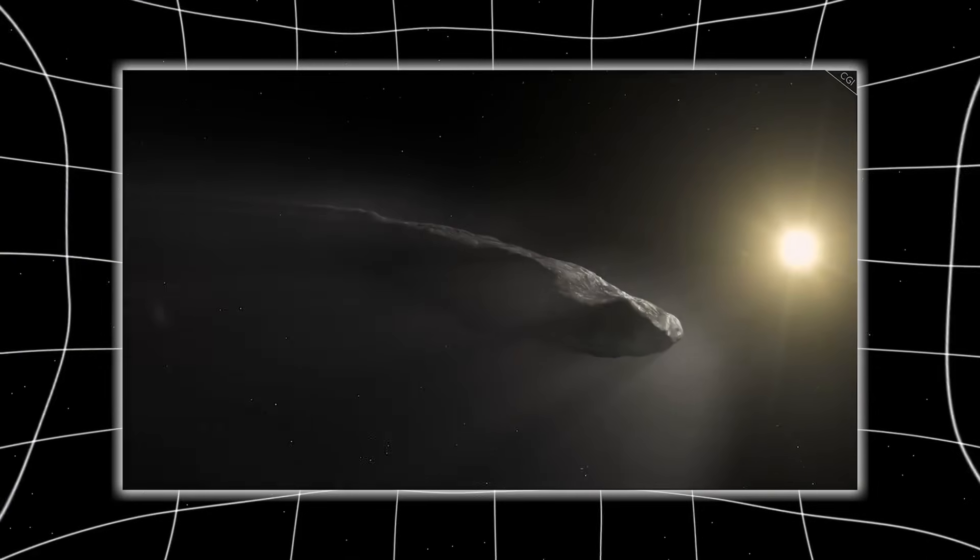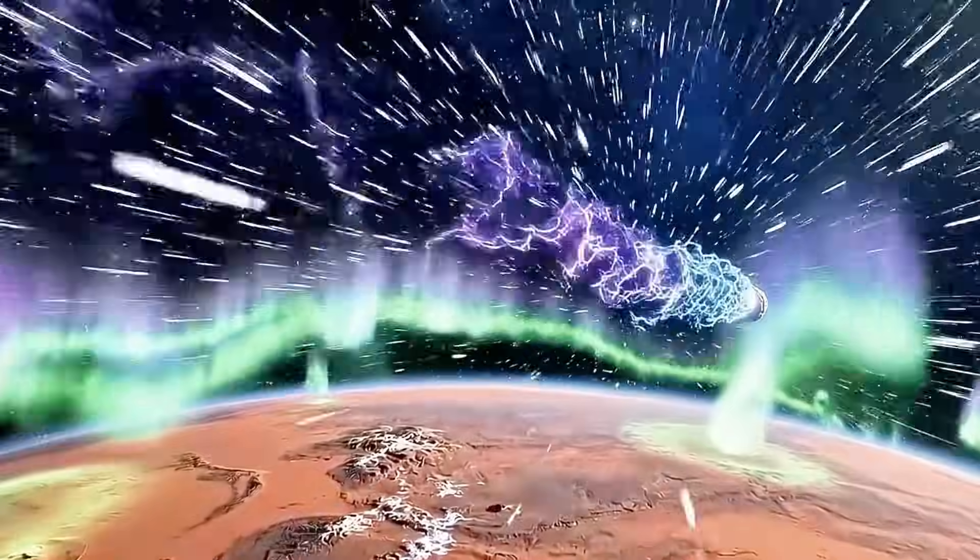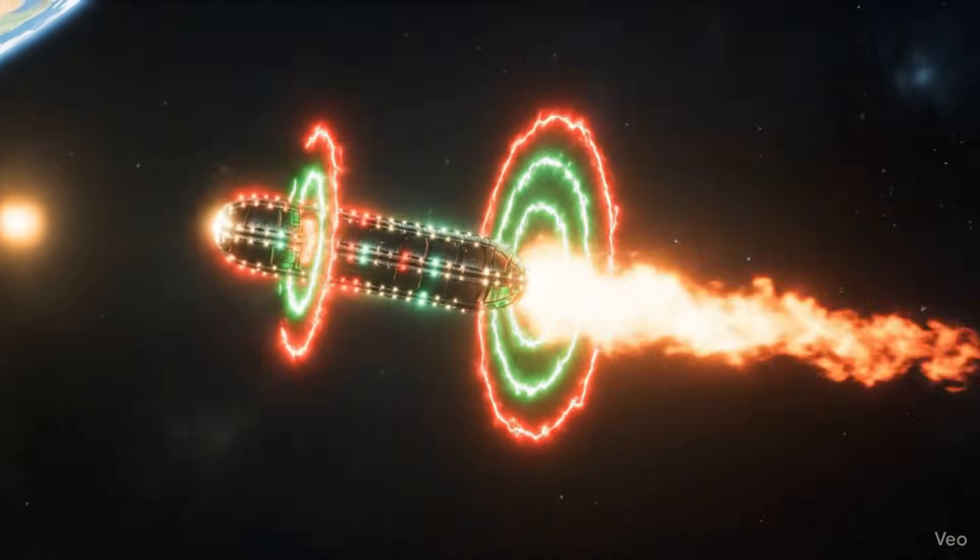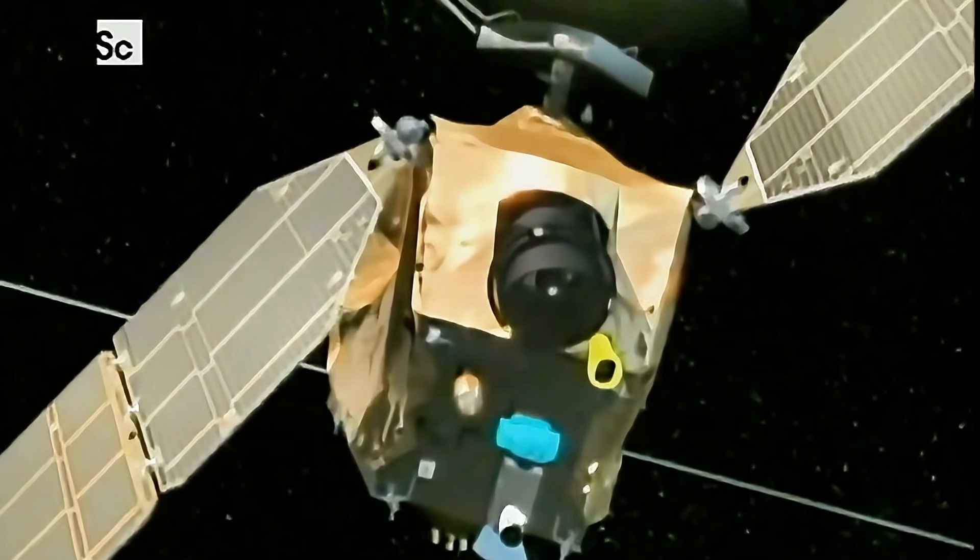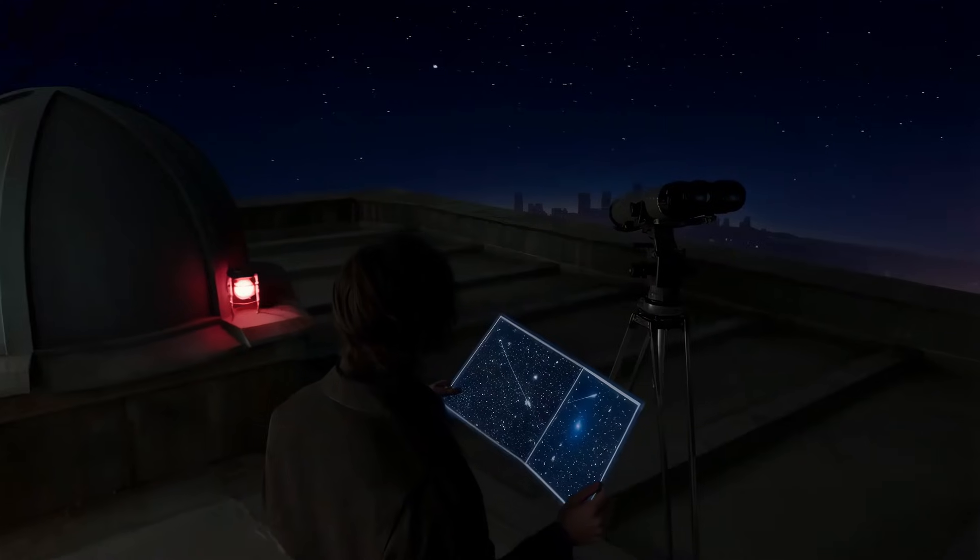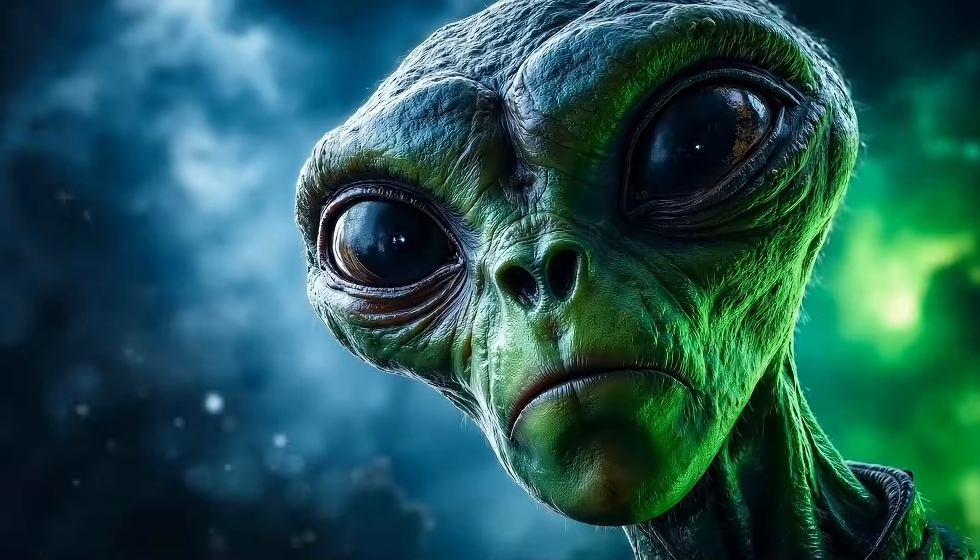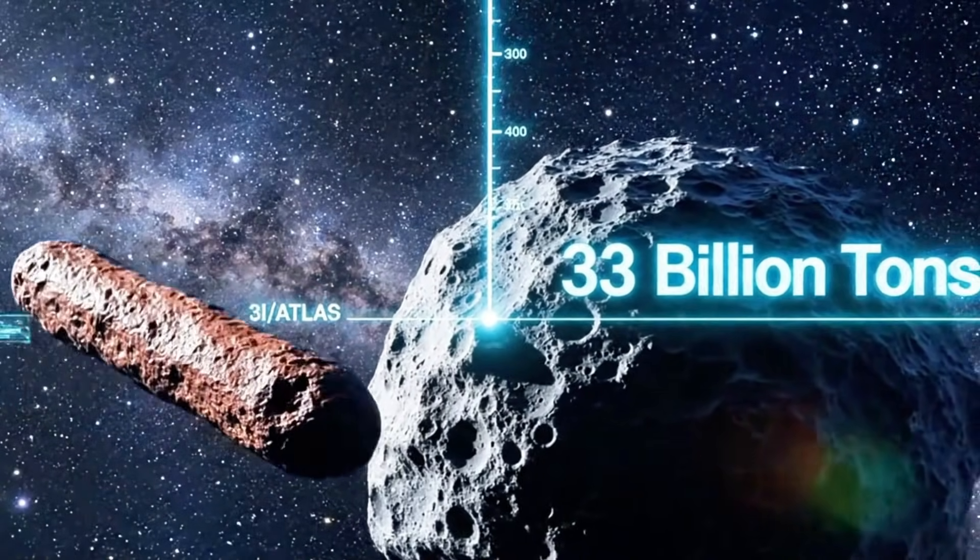Tonight's observation window critical for multiple reasons. First, maximum resolution. Closest approach means smallest angular separation, means largest apparent size, means finest details visible. Surface features, structural elements, compositional variations all maximally observable tonight. Second, spectroscopic opportunity. Maximum brightness enables detailed spectrum. Chemical fingerprints clear. Elemental abundances measurable. Molecular signatures identifiable. Comparing spectrum at closest approach with earlier observations reveals evolution, shows compositional changes, demonstrates activity variations, proves or disproves theories about internal structure. Third, astrometric precision. Exact position measurements. Trajectory refinement. Orbit calculation improvement. Future predictions enhanced. Jupiter encounter timing sharpened. Post-solar system path clarified. Where 3i Atlas goes after leaving our system, tonight's data helps predict.